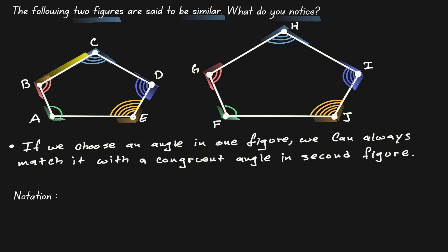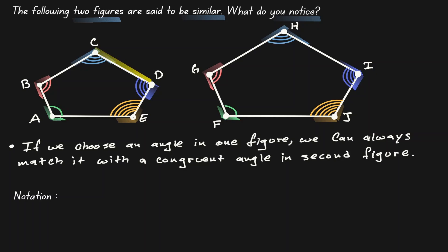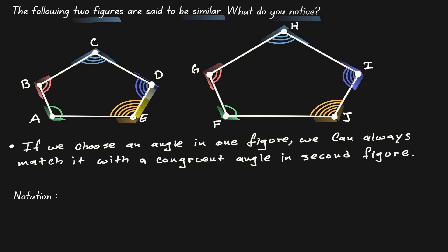If we choose BC, we can find some scale number that we can multiply by to obtain the length of GH. The same with CD — we can find some scale number to multiply the length of CD to obtain the length of HI. Going around the figure, for DE we can find some number to multiply to obtain the length of IJ. And for AE, we can find some number to multiply to obtain the length of FJ. If all this is true, then we can say that the sides on both figures are in proportion.